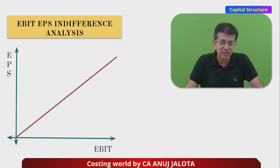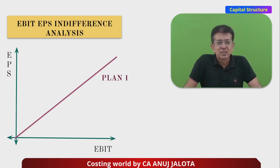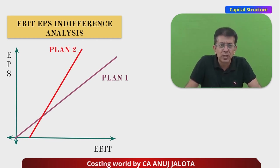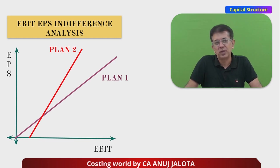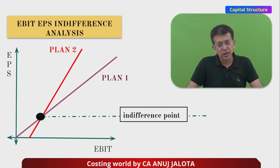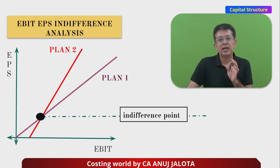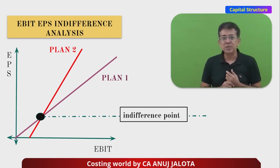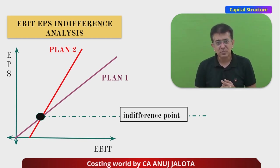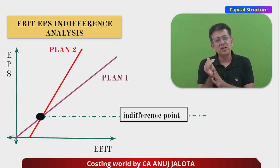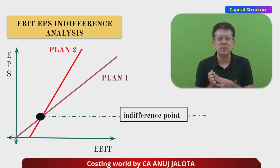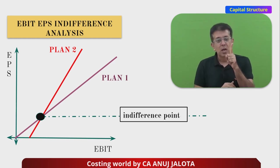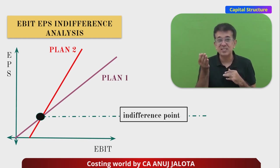That line represents Plan One. Do the same for Plan Two, which is the more risky plan. These two lines will meet somewhere — wherever they meet, that is the indifference point. At the indifference point you are indifferent between Plan One and Plan Two because EPS is the same. Companies select the option where EPS is higher, so when EPS is equal they become indifferent.